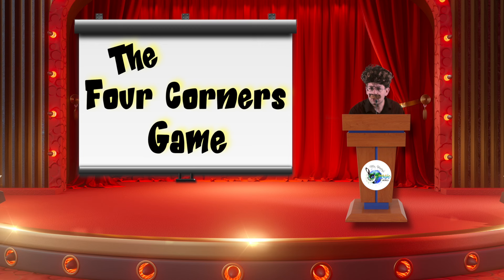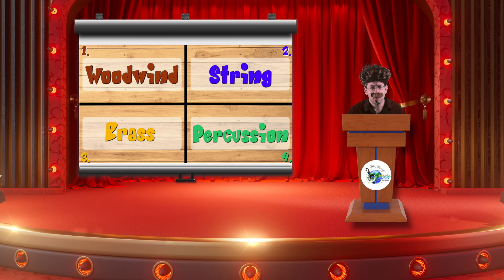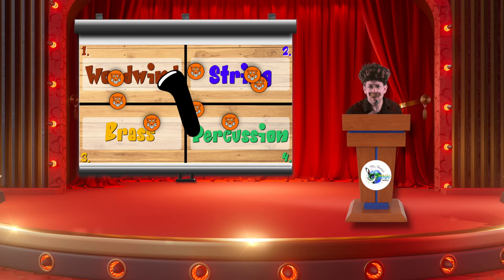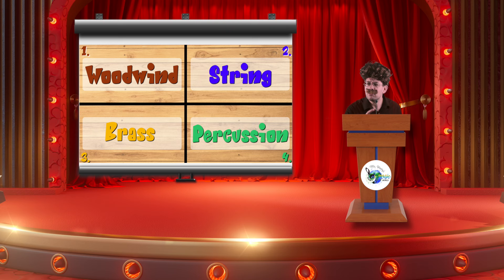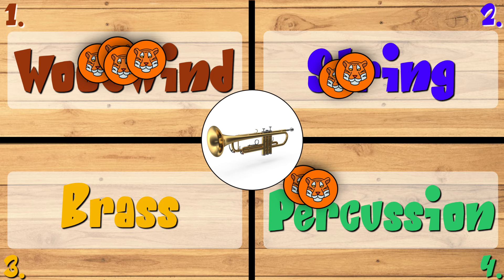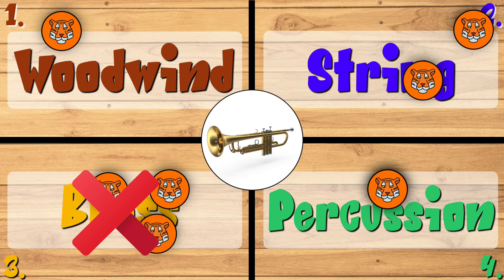In each of the four corners, there will be labeled the woodwind, string, brass, and percussion family. You will get ten seconds to move to any one of those families. If you do not pick one of the families after the ten seconds is up, you are out. Then, once you are in the corner of your choice, an instrument will be heard and displayed. If you are standing in the corner of the family that the instrument displayed is a part of, then you will take a seat and are out of the game.